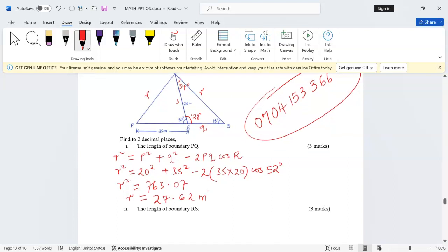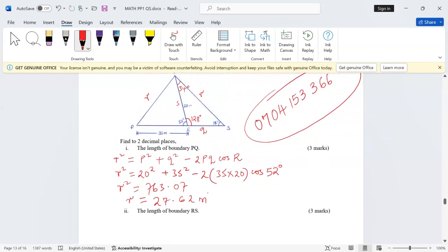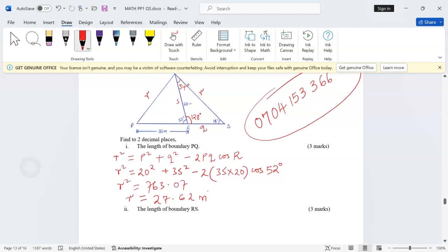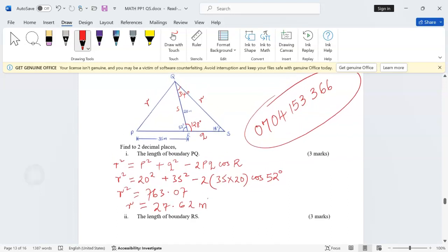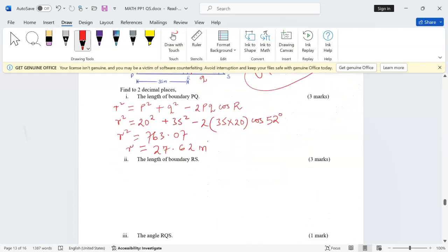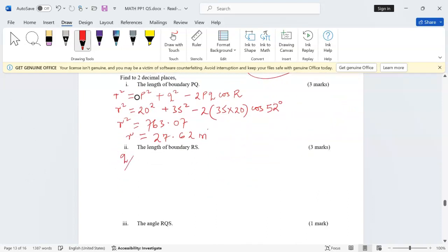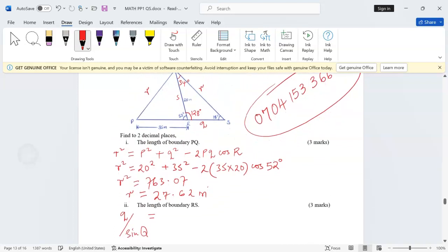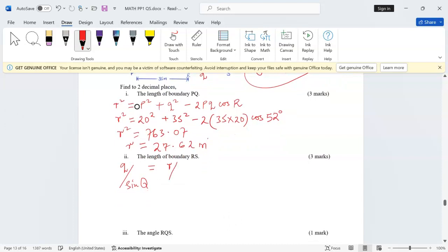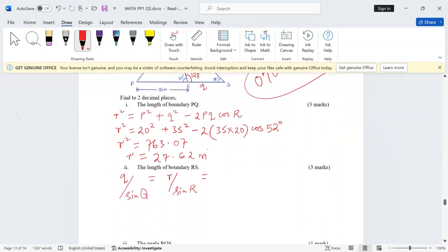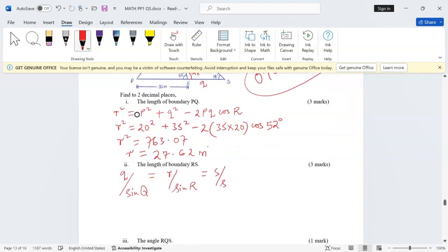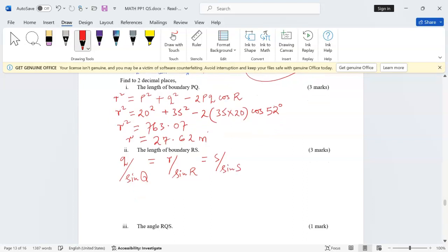Now we can talk about the sine rule. Sine rule usually says, for these triangles, remember we are using specifically QRS, we can say the length q divided by sine of the angle at Q, we should get the same as the length r out of the sine of the angle at R, and we also get the same as the other length, length s, out of sine of the angle at S.